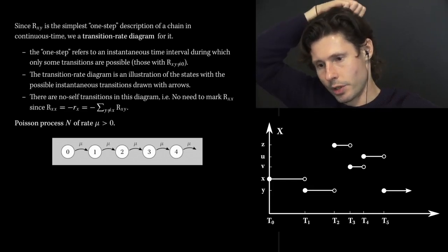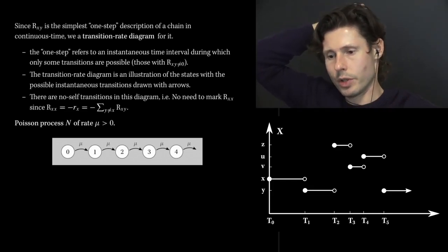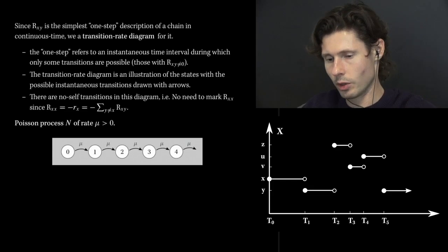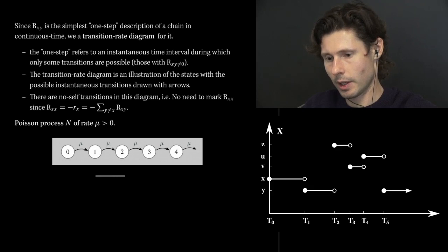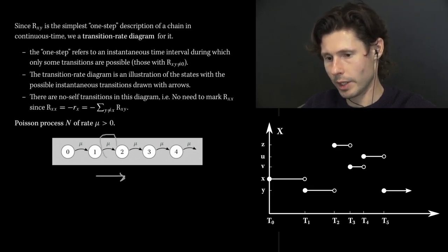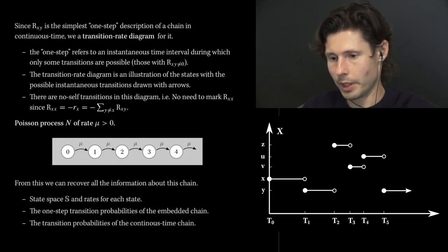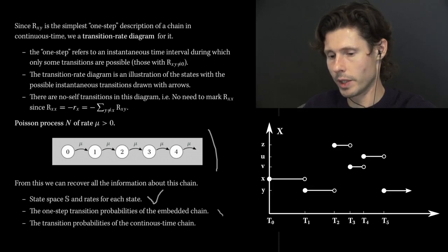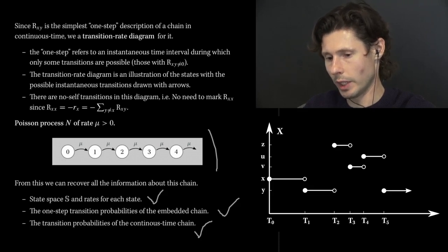Here is the Poisson process of rate mu and its transition rate diagram. Not surprisingly, from any state y, we can increment by 1. Every single state is just going to increment by 1 at a rate equal to the rate of the Poisson process. Just from this diagram alone, you can get all the information you need: the state space, the one-step transition probabilities of the embedded chain, the transition probabilities between any two states in any amount of time, and so on.